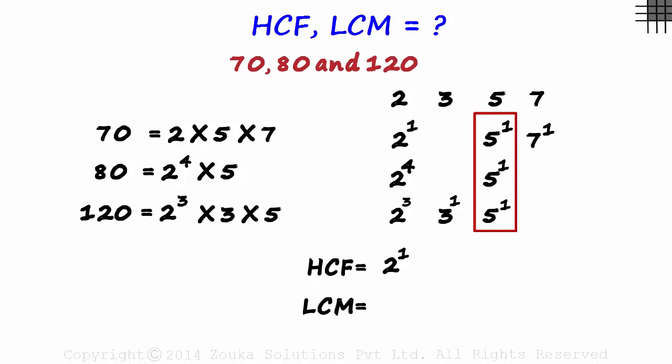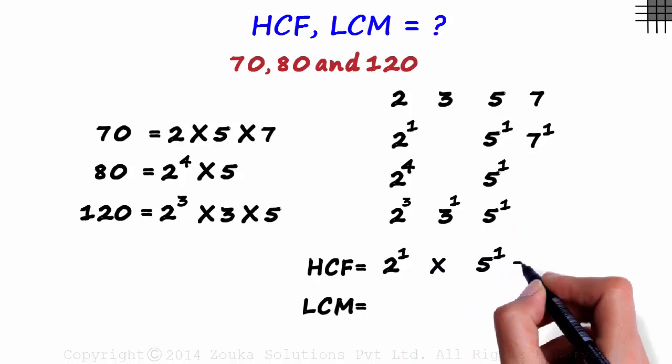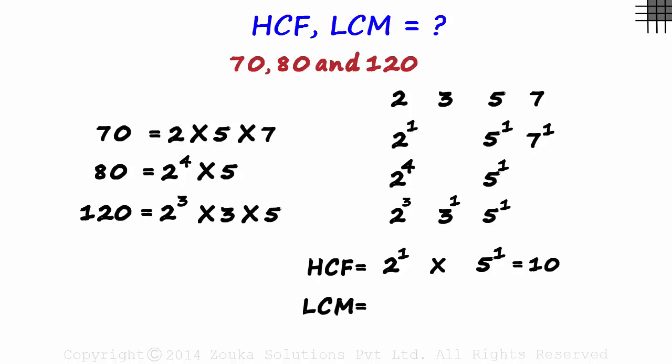And in this column as well, the least power is 1. So we multiply this with 5 raised to 1. And the product equals 10. The HCF of these three numbers is 10.